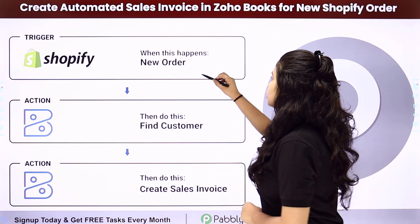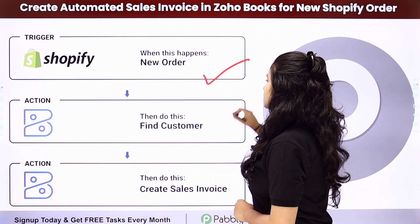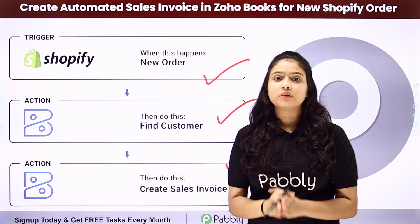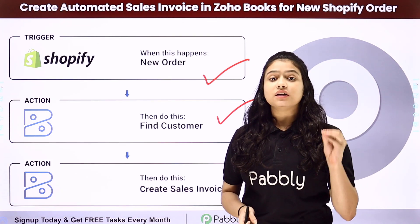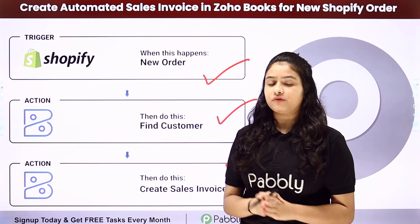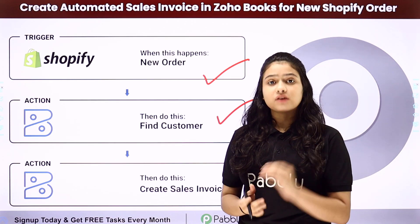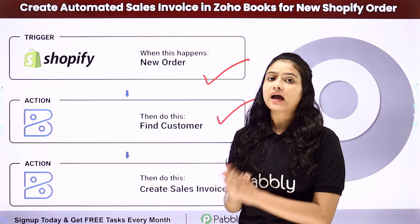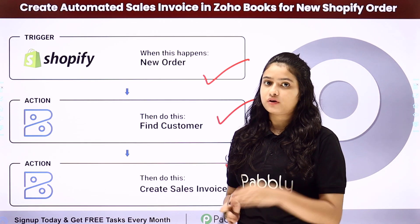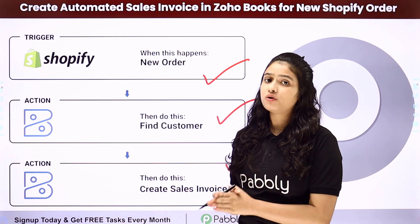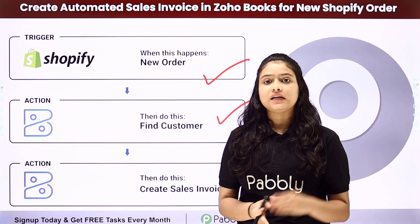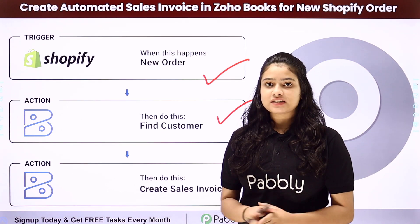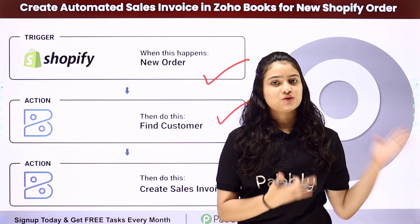We have Shopify in our trigger and Zoho Books in our actions. We will connect both of them using Pabbly Connect so that whenever a new order is placed in Shopify, first the customer will get searched in Zoho Books, and if that particular customer is an existing customer of Zoho Books, automatically a new sales invoice will be created. Now let me take you to my screen to learn the entire process step by step.